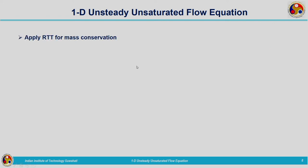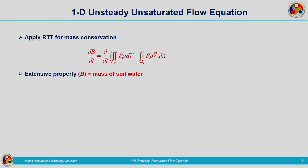Now we are going to derive our mass conservation equation, making use of the Reynolds Transport Theorem. The RTT expression is very familiar. We need to define our extensive property and also intensive property. The extensive property is the mass of soil water. Coming to intensive property, beta is equal to dm, that is equal to 1, since there is no phase change taking place — db by dm can be considered to be 1.